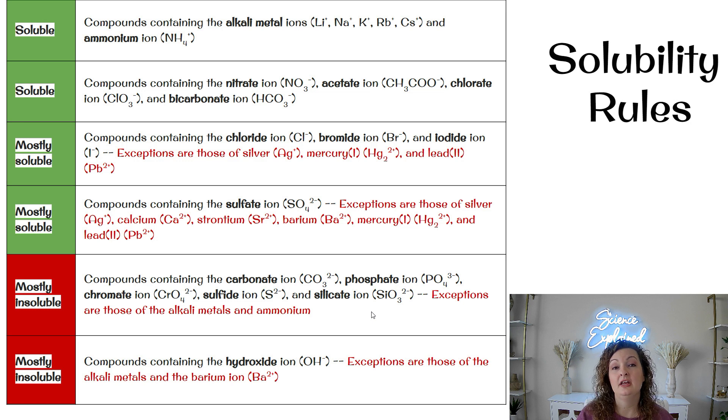And then the bottom two, these will be insoluble or not dissolve. So compounds containing carbonate ions, phosphate, chromate, sulfide, or silicate. And there are exceptions with those containing the alkali metals and ammonium, because that would clash with our rule number one, saying that those are soluble. And then the very last one that you need to be aware of, for mostly insoluble, compounds containing hydroxide ions will not be soluble except for those that have alkaline metals and barium. So alkaline metals and barium will be soluble.